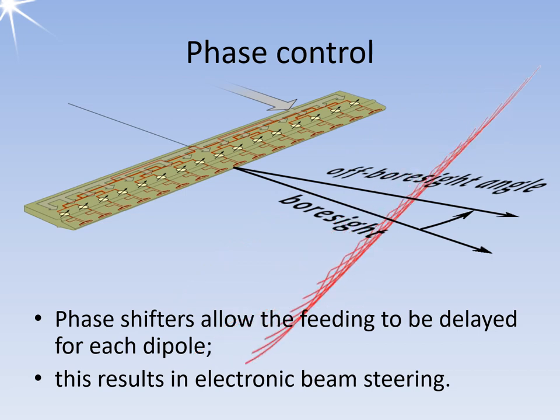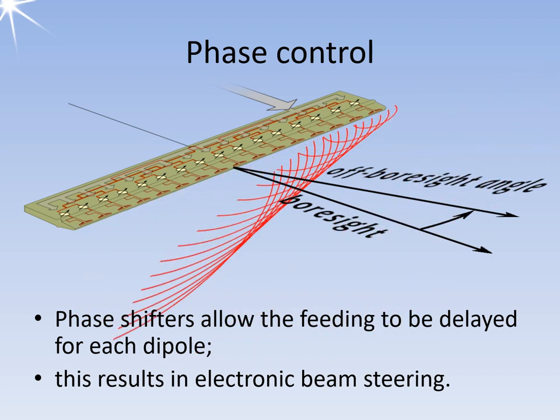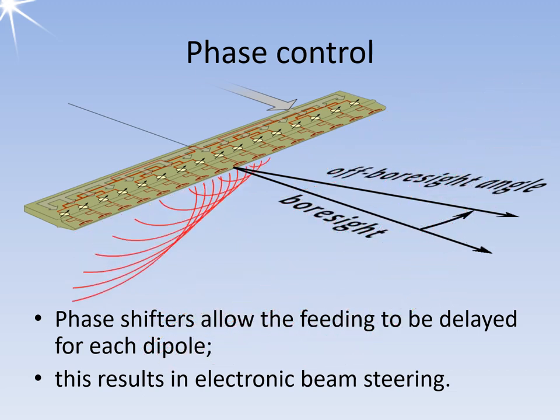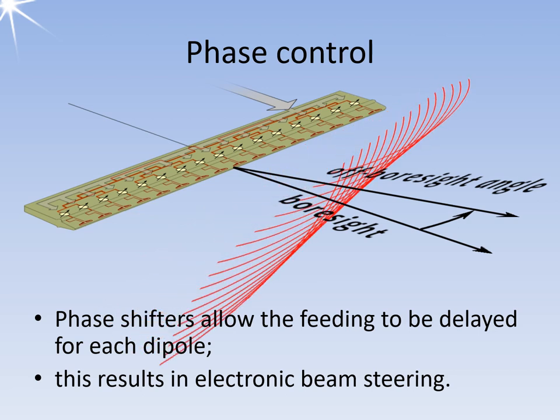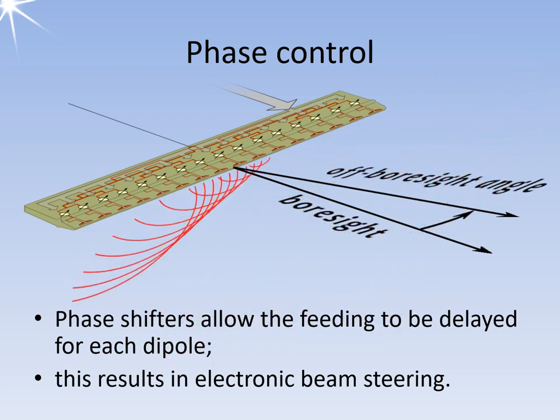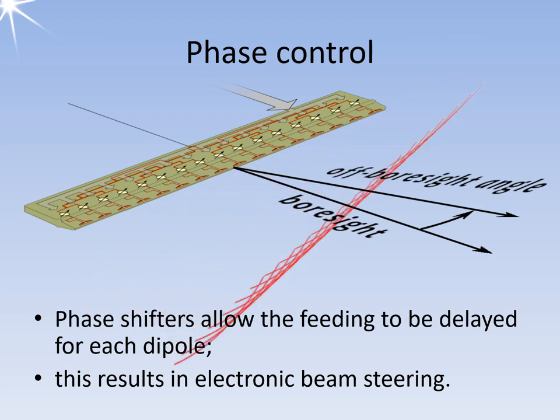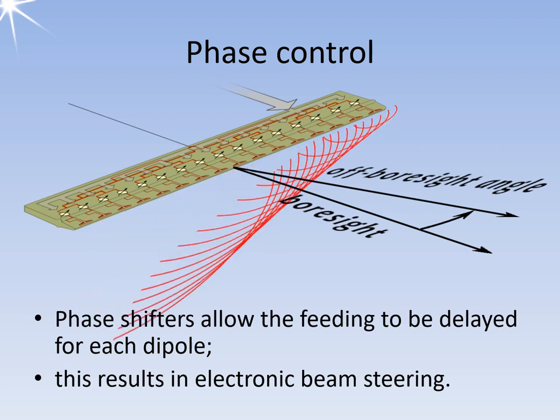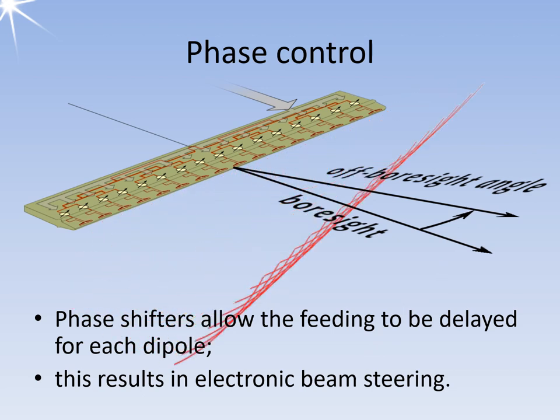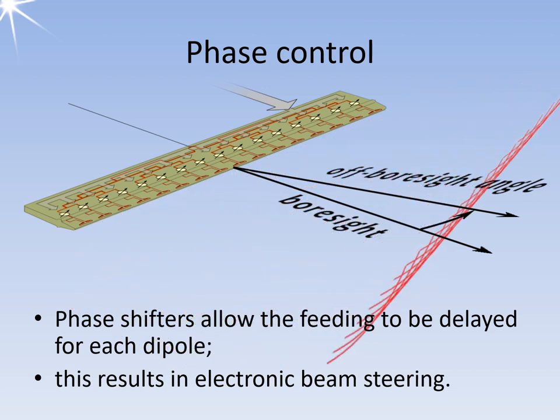A phased array antenna is designed with phase shifters inserted in each feed line to the dipoles. This enables the direction of radiation to be adjusted to the left or right by an off-boresight angle. This adjustment is done electronically, without any inertia, making it faster than mechanical rotation. The phase shifters also have digitally controllable attenuators, allowing the power distribution within the series to be managed for optimizing either a sharper main lobe or a smaller side lobe level.